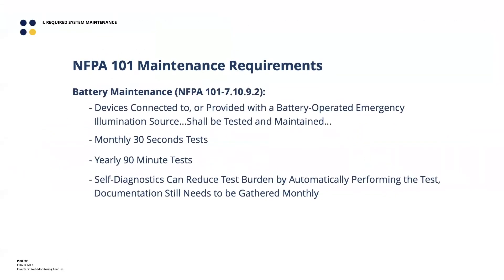When we talk about emergency lighting, exit signs, and inverters, we primarily care about NFPA 101, the Life Safety Code. There's a lot in Chapter 7 about the obligations and design of these systems, but in Chapter 7, Part 10, Paragraph 9, Section 2 is the information we're actually discussing today. It details the ongoing obligations the facilities team has to keep an emergency system code compliant. Any device connected to or provided with a battery-operated emergency illumination source shall be tested and maintained.